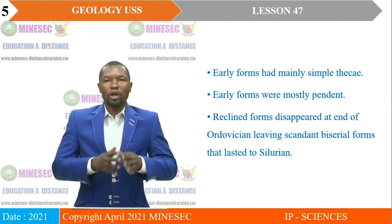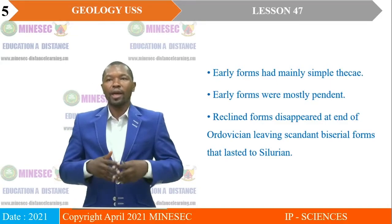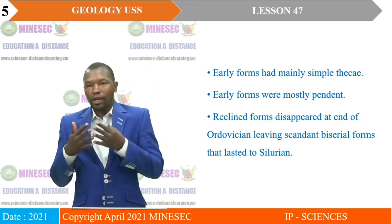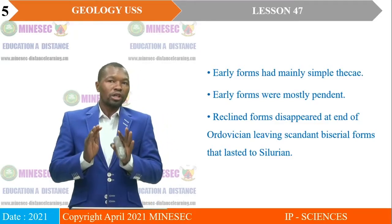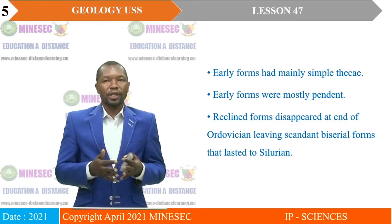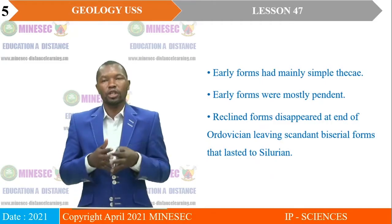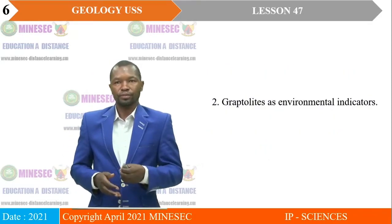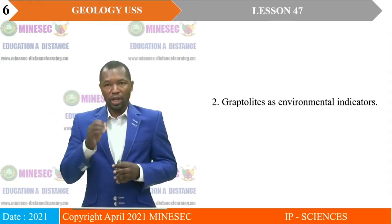The reclined forms disappeared at the end of the Ordovician, leaving only the scandent forms, which were biserial. They came to extinction during the Silurian. That is the guide to explaining the evolutionary changes that operated between the early form graptolites — that is the dendroids — and the true graptolites. The second part of the question: discuss graptolites as environmental indicators.